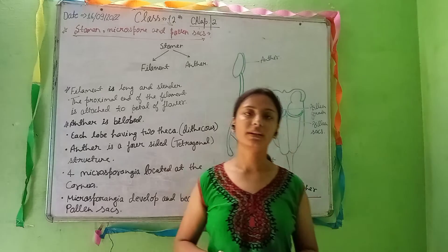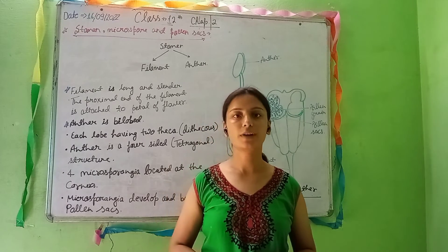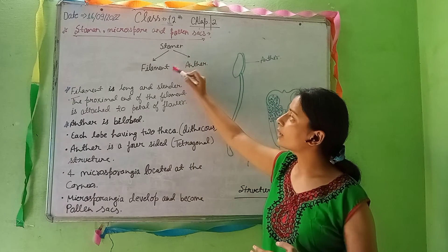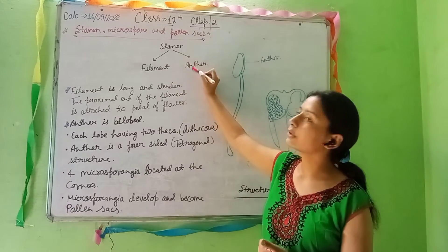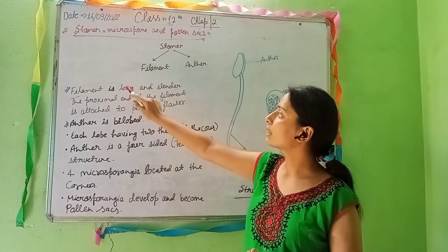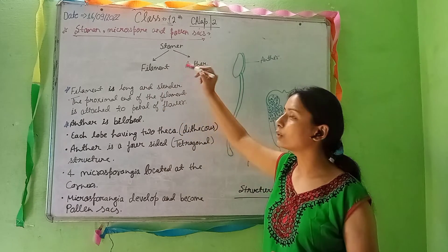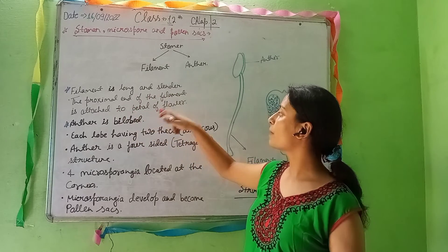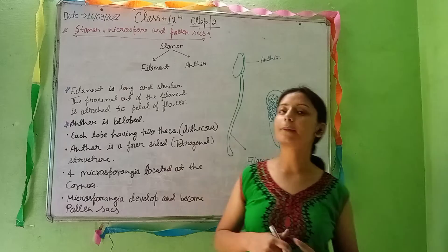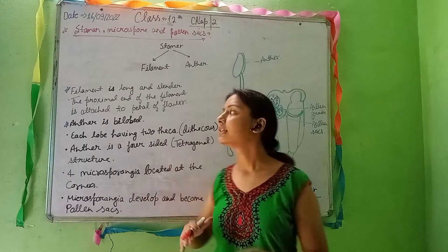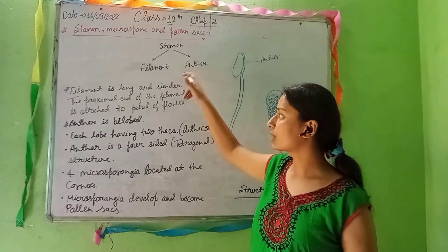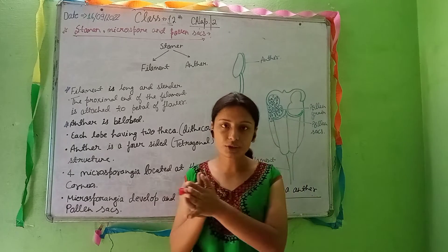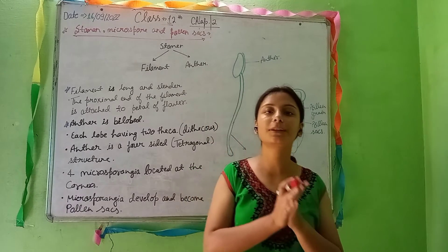The stamen is the main reproductive part of a flower. It consists of a filament, whose proximal end is attached to the petal of the flower. The other main part is the anther, and the anther has two lobes.